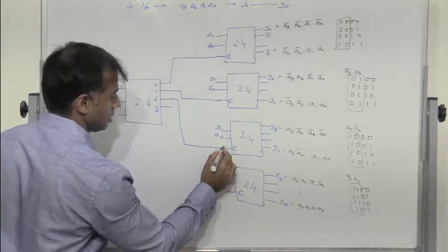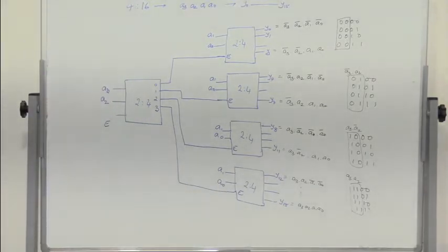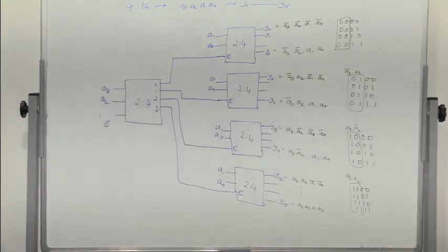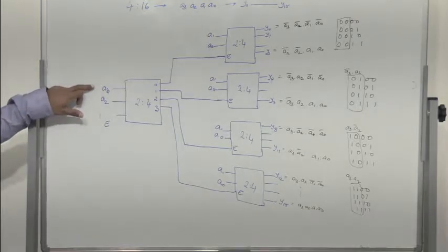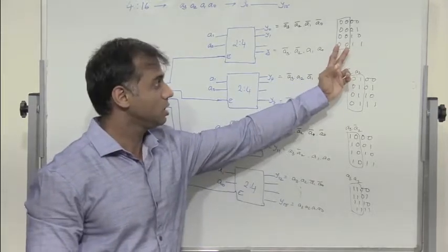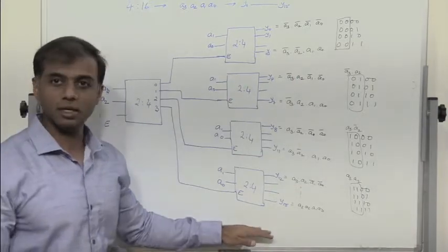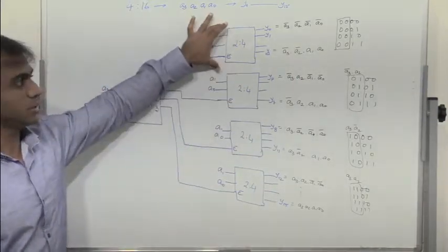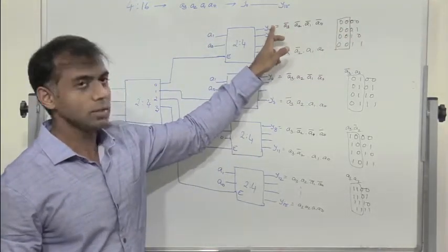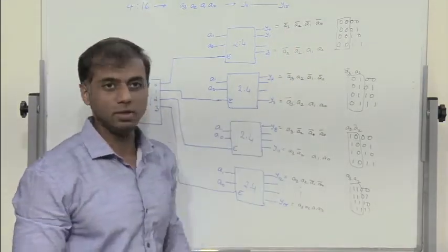Line 1 connects to the second decoder, line 2 to the third decoder, and line 3 to the fourth decoder. The first 2-to-4 decoder is enabled when A3 and A2 are 0,0; all others are disabled. When A1 and A0 are 0,0, Y0 is high; 0,1 gives Y1; 1,0 gives Y2; and 1,1 gives Y3.